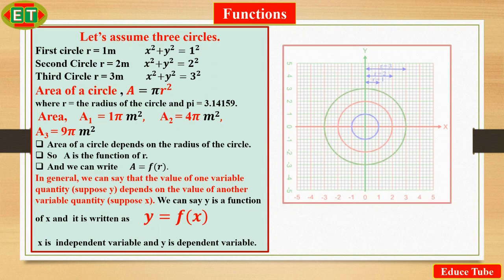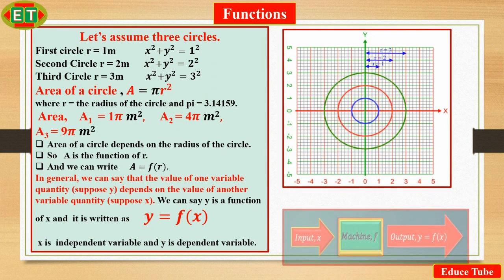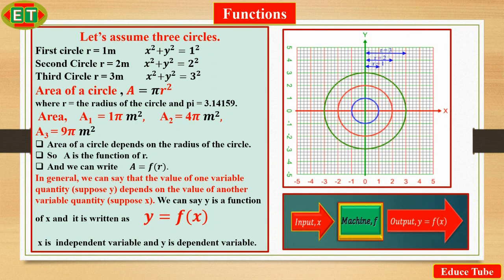As I told, area of a circle depends on radius of a circle. To get in depth of understanding, I am considering three circles. From equations of circle, we get the radius as 1, 2, and 3 respectively. Using the formula of area of circle, A = πr², we get the area of circle as π, 4π, and 9π respectively.